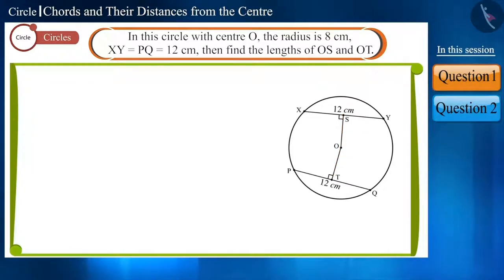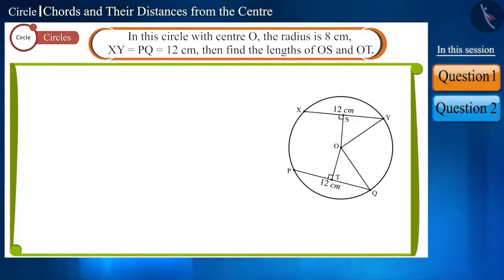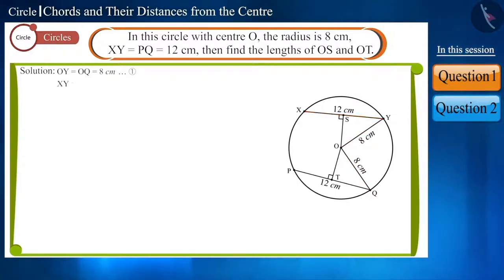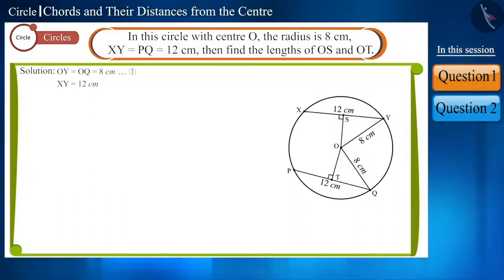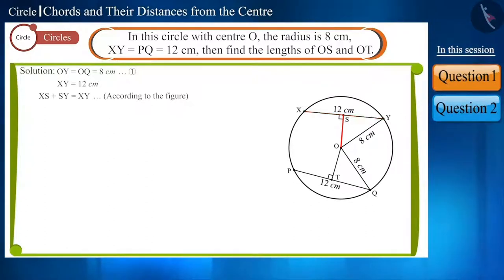We are given that the radius of the circle is 8 cm. If we join OY and OQ, these are the radii of the circle, so OY and OQ will be equal to 8 cm. We are given that the length of XY is 12 cm. According to the figure, XY is formed by joining XS and SY, and OS is perpendicular to XY.